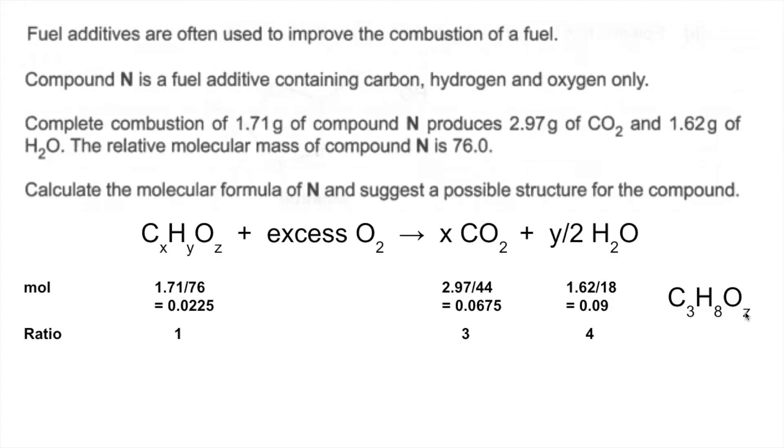We still don't know what the Z is for O, so at the moment that's what we know. So if we bring in the MR of N now, 76, subtract the 3 carbons and 8 hydrogens, so that's 44 we're going to take off. And that leaves 32 for the OZ part, so therefore Z must be 2.